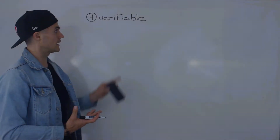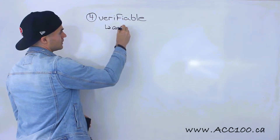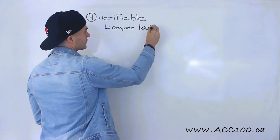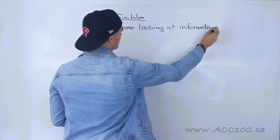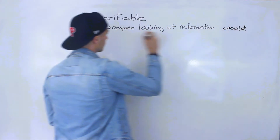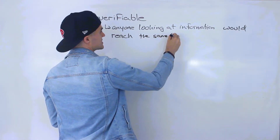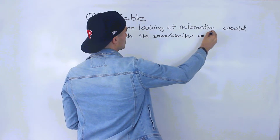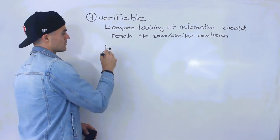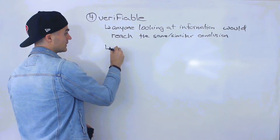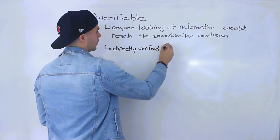The fourth quality we'll talk about is that information has to be verifiable. That basically means that anyone looking at the information would reach the same or a similar conclusion. There are two ways that information could be verifiable: it could be directly verified or observed.